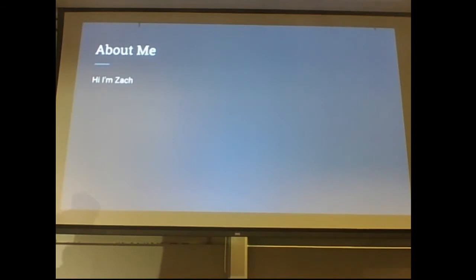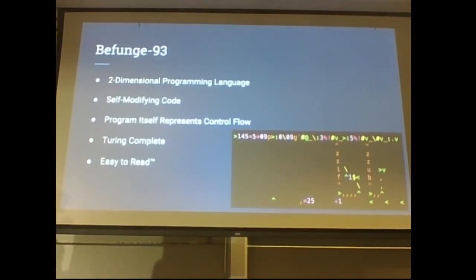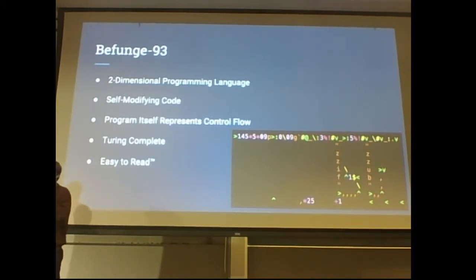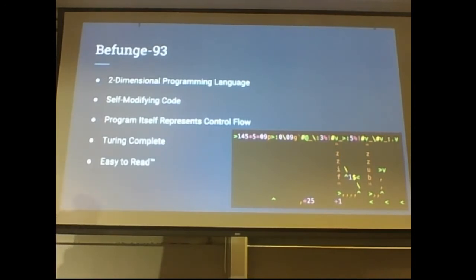First, a little bit about me. I'm Zach. So we're going to talk about Bofunge 93. For those of you who don't know, it's a very special programming language. It is a two-dimensional programming language, which for all of you normal programmers out there I'm sure comes as a shock. But really, it's a wonder of programming design because you have a program that very, very well maps out exactly what it does.